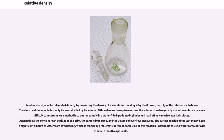Relative density can be calculated directly by measuring the density of a sample and dividing it by the known density of the reference substance. The density of the sample is simply its mass divided by its volume. Although mass is easy to measure, the volume of an irregularly shaped sample can be more difficult to ascertain. One method is to put the sample in a water-filled graduated cylinder and read off how much water it displaces. Alternatively, the container can be filled to the brim, the sample immersed, and the volume of overflow measured. The surface tension of the water may keep a significant amount of water from overflowing, which is especially problematic for small samples.